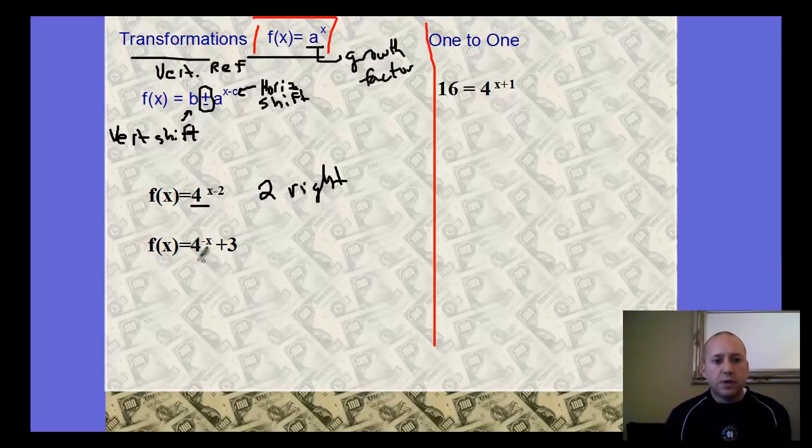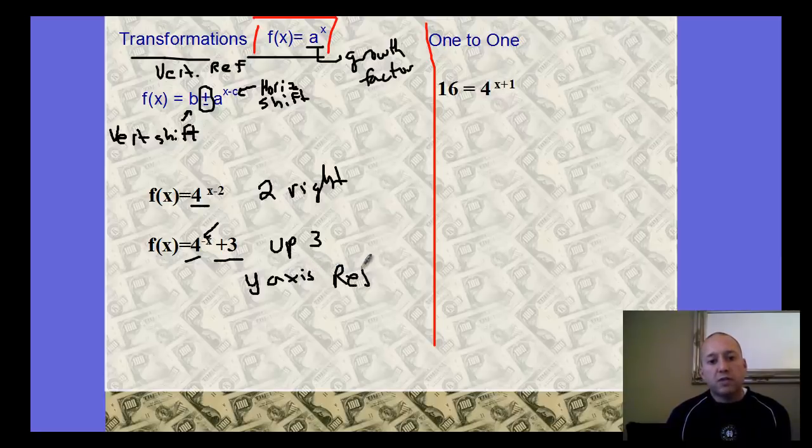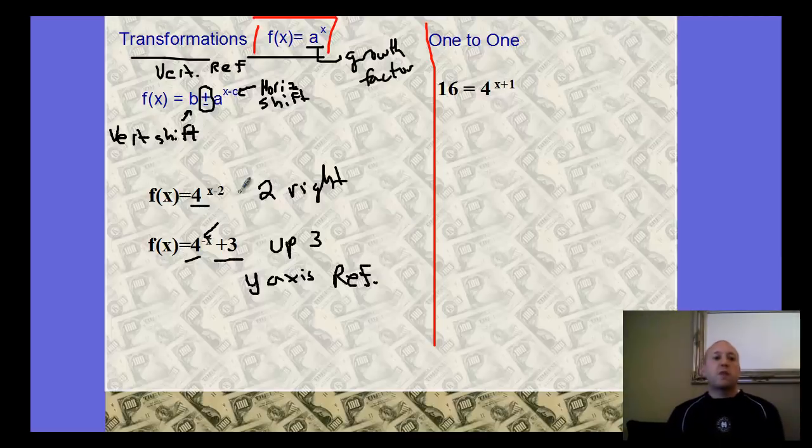Then the next one here, we still have a growth factor of 4, so our starting value would be 4. We are going to shift it up 3 as well. This is an outside the function, so we're going to go up 3. Then our negative x, it's a negative x, not a negative 4, a negative x. This would be a y-axis reflection, which means reflection left to right. We should be able to look at our transformations before we even start graphing and understand what's happening.